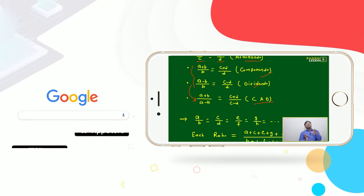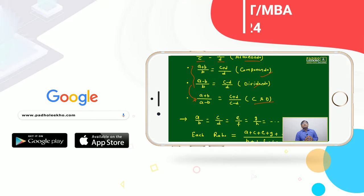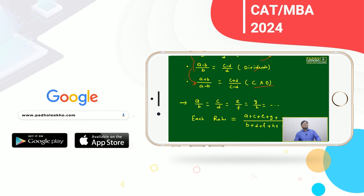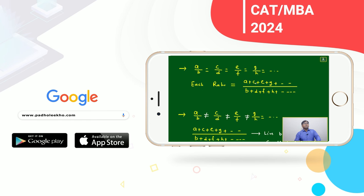you are just making the equivalent ratio, means any particular ratio is kept on changing by certain operations, then we can say these all componendo, dividendo, alternendo will be applicable.